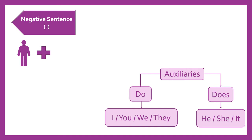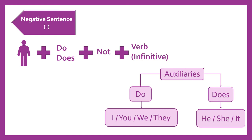So the negative sentence structure: we start with a pronoun, next we use the auxiliary do or does depending on the pronoun, then the word not — because it is a negative sentence — then a verb in the infinitive tense. We use the infinitive because if it were present simple, we'd have to add an S for pronouns he, she, or it. And finally we end with the complement.